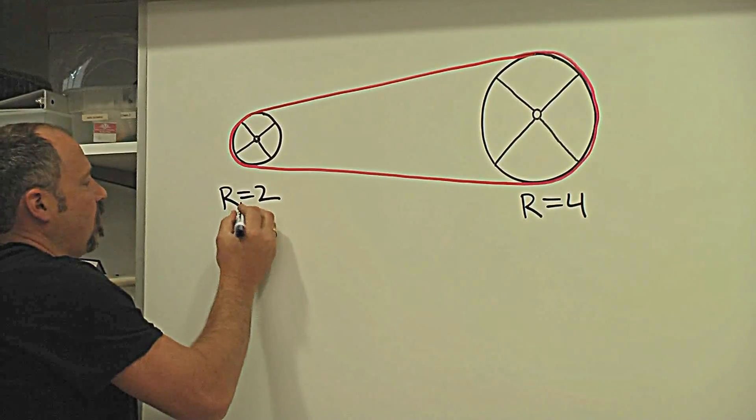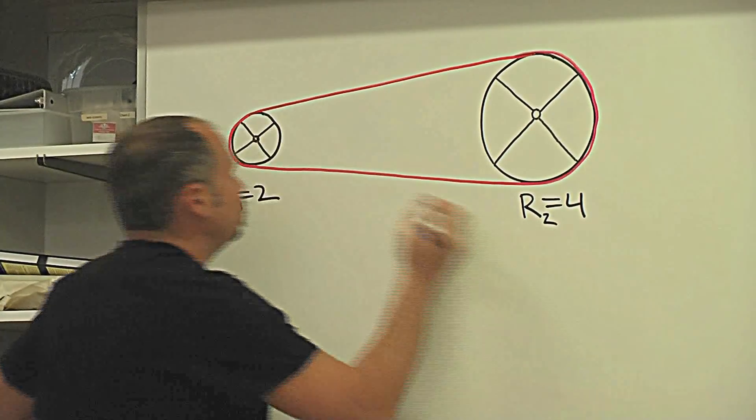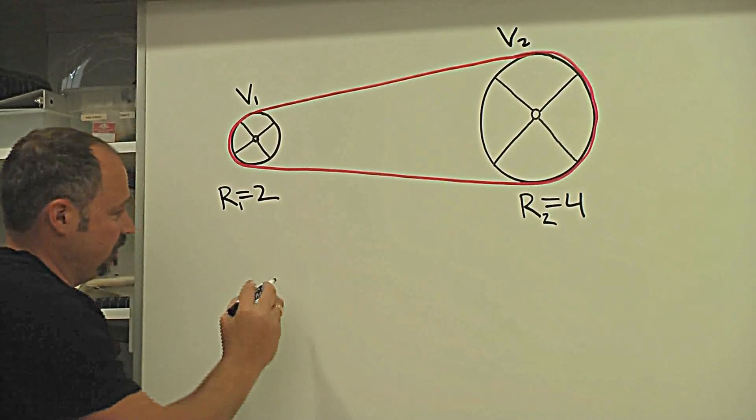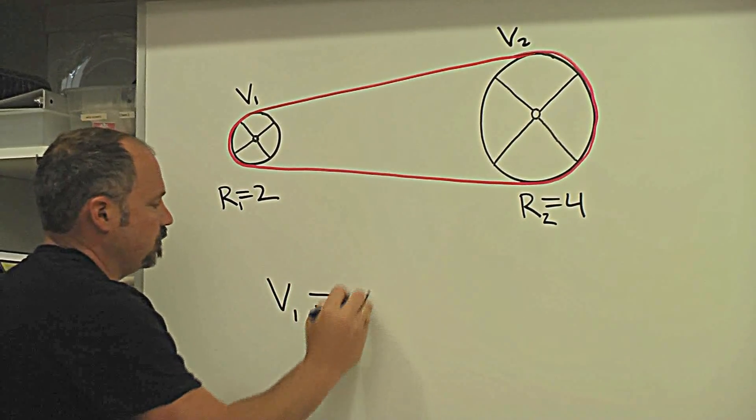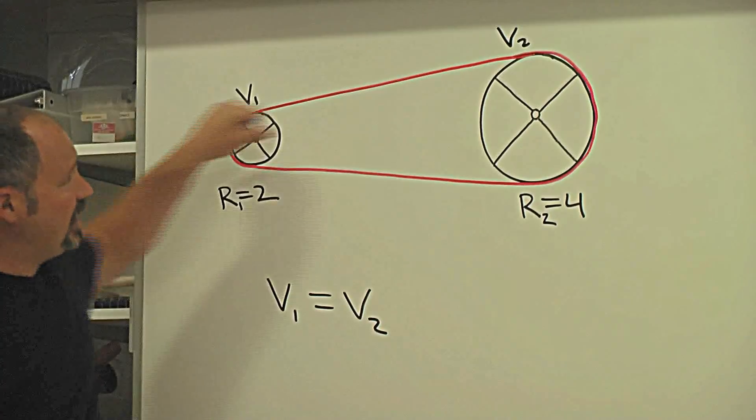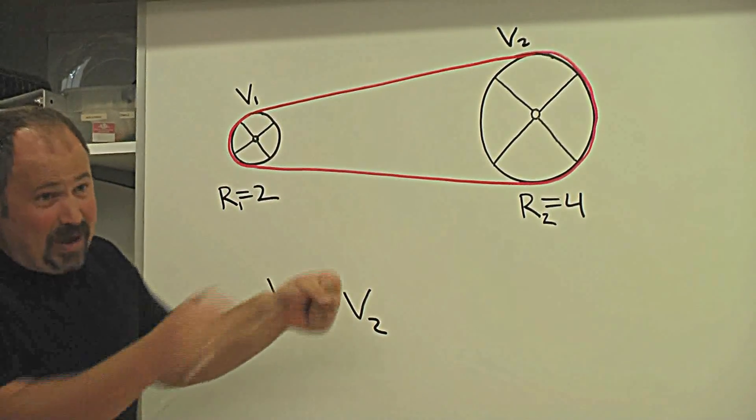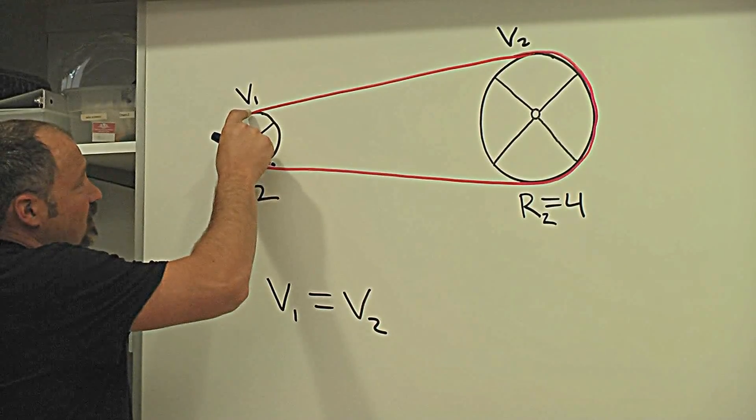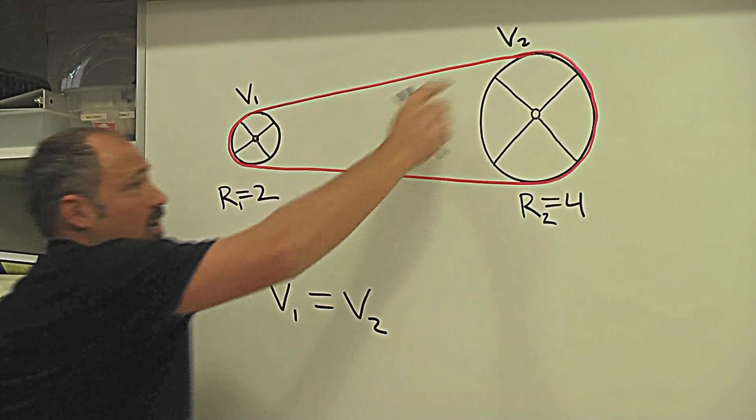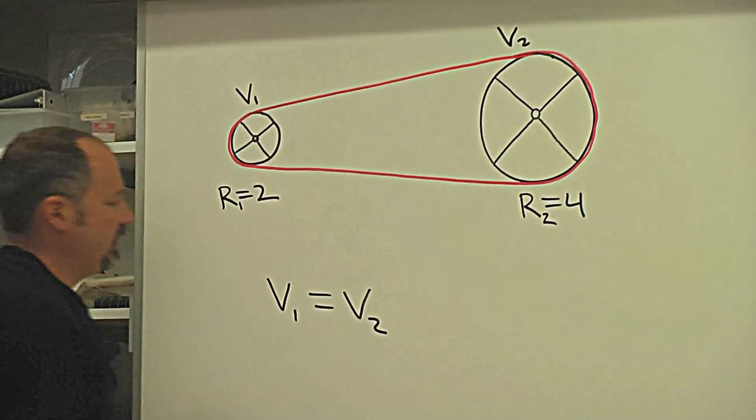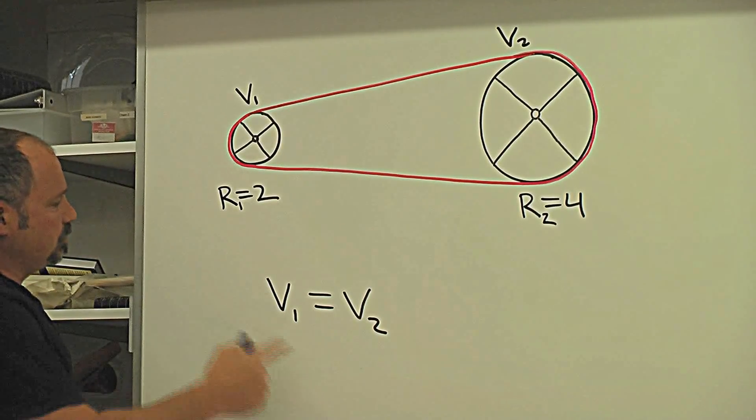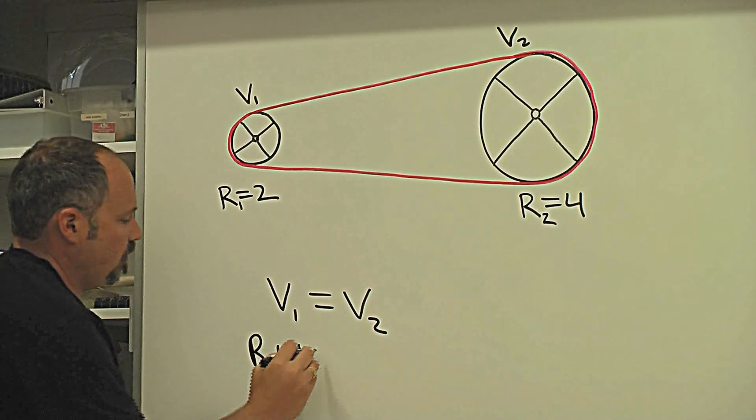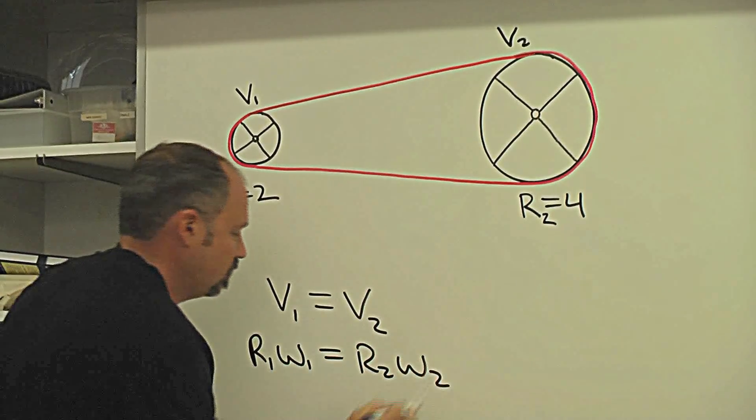So if I call this r1 and this r2, I know that v1 here and v2 here, they're equal to each other. And I know that because the chain is linear and the chain's not expanding or contracting. So whatever rate of change that the chain comes off of this sprocket, it has to be the same on this one.